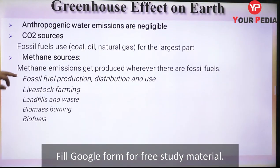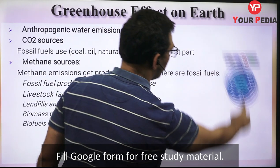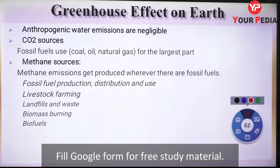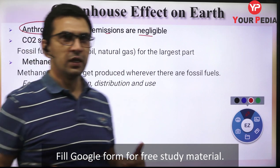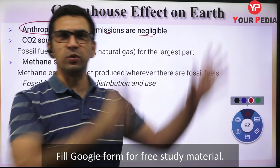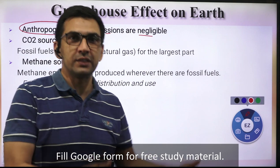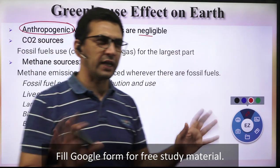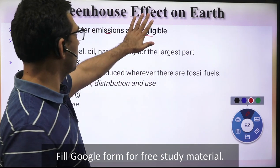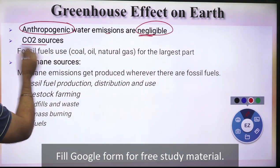Now let us see the sources of these greenhouse gases. Anthropogenic water vapor emissions are negligible - through our activities we have not been able to release much water vapor into the atmosphere, and the natural water cycle is more or less maintained. Now for carbon dioxide: if we have increased CO2 release, what are those activities? Carbon dioxide is released mostly by burning of fossil fuels.